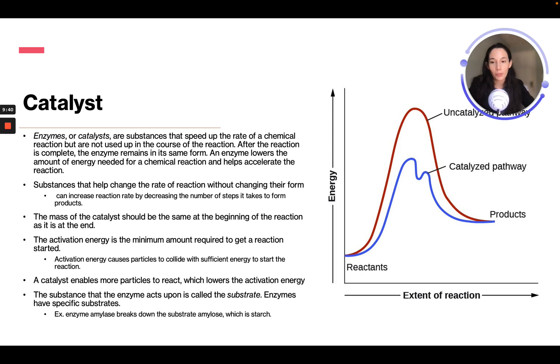The substance that the enzyme acts upon is called the substrate. Enzymes help specific substrates. Example: enzyme amylase breaks down the substrate amylose, which is starch.